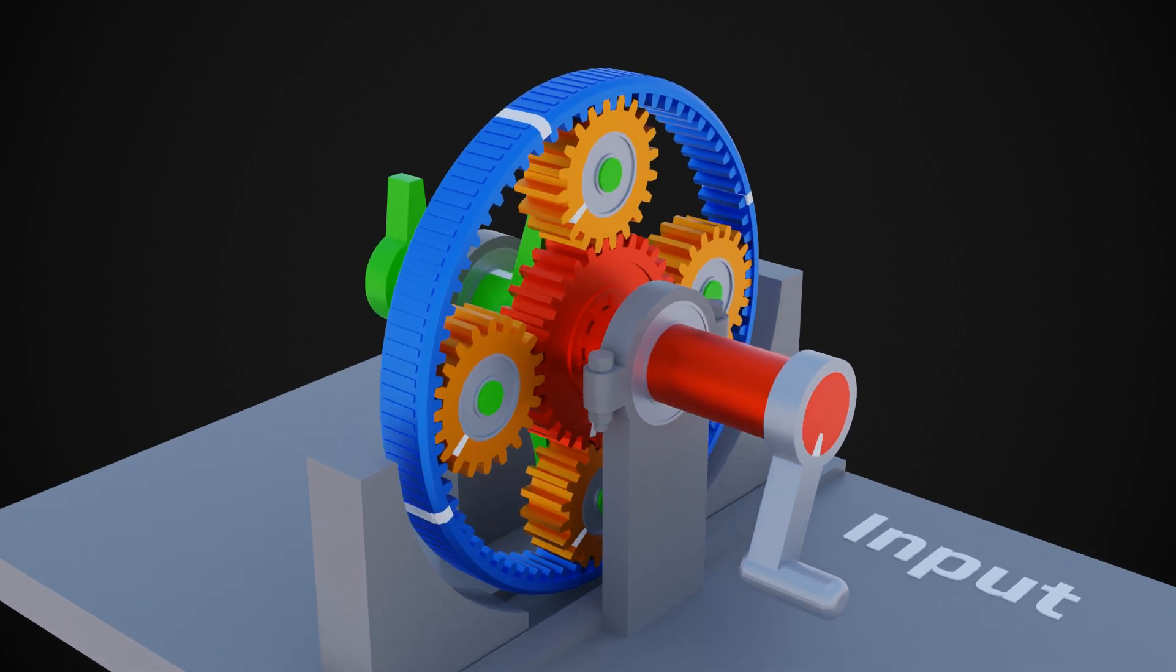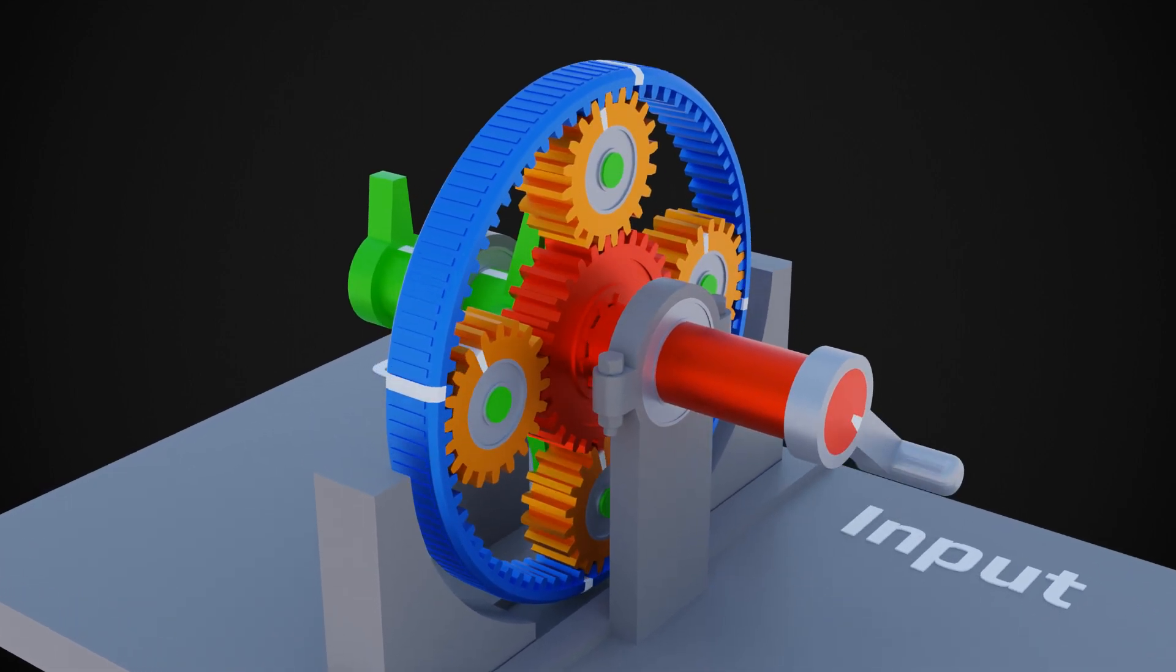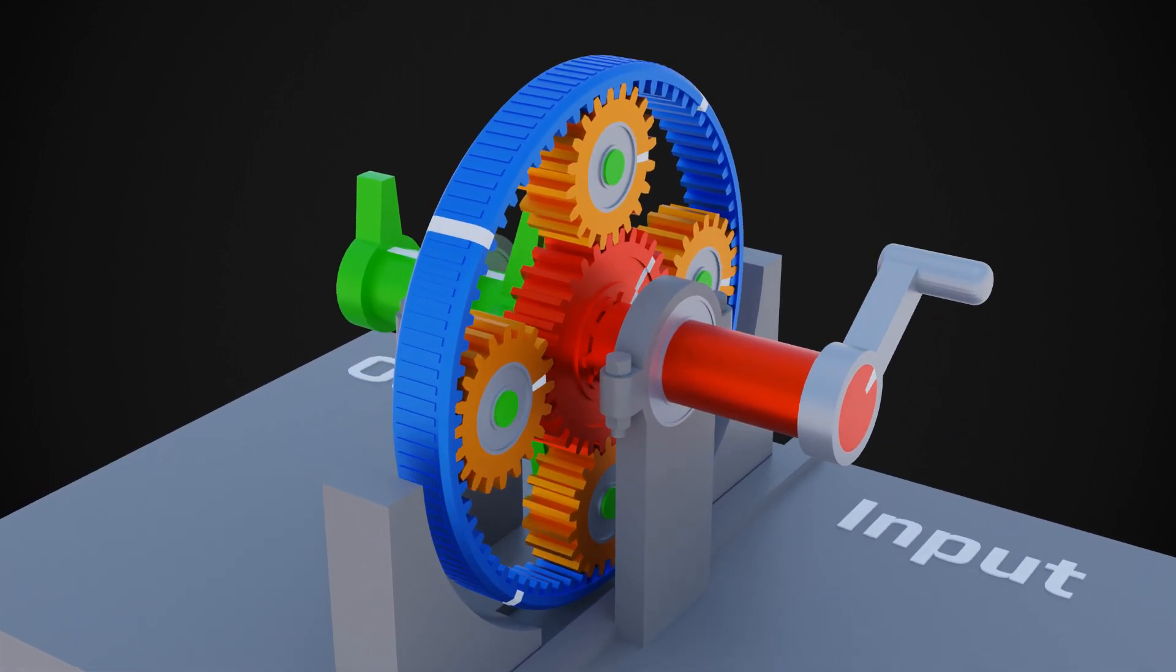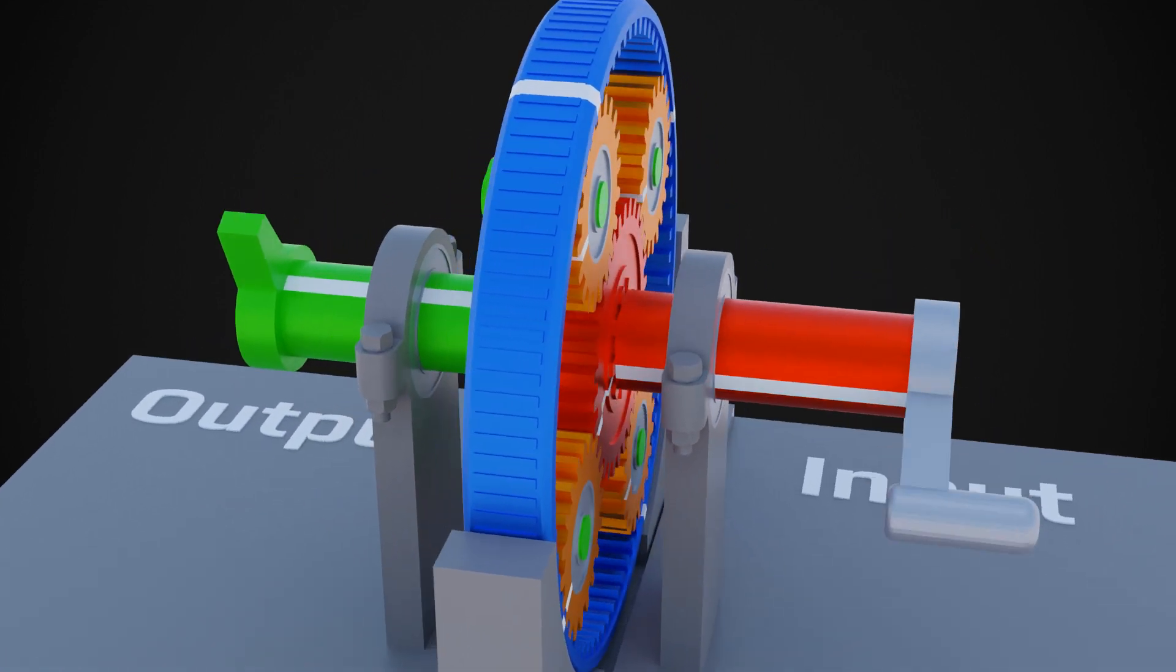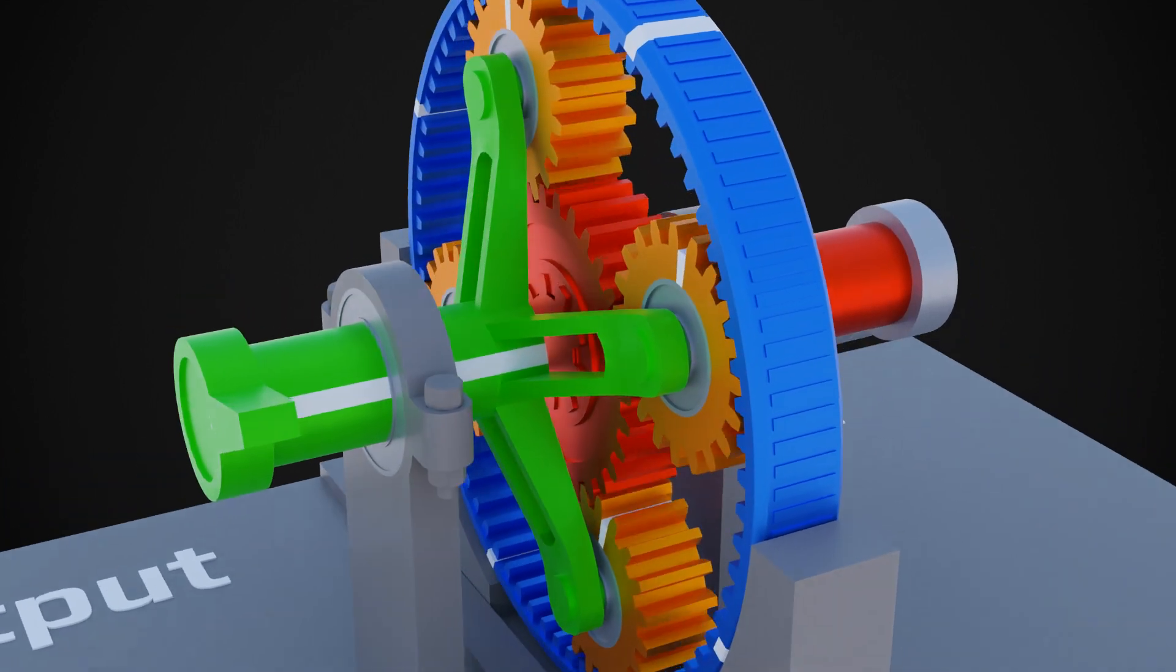This is a planetary gear set. It is widely used in reduction gearboxes and also in automatic transmissions of vehicles. Giving power to one gear, you can get different output from different gears.